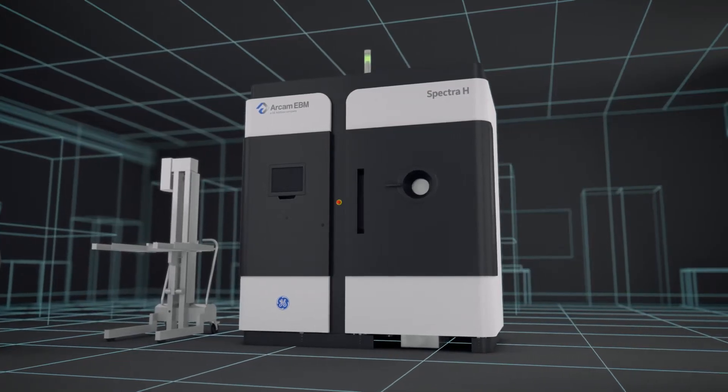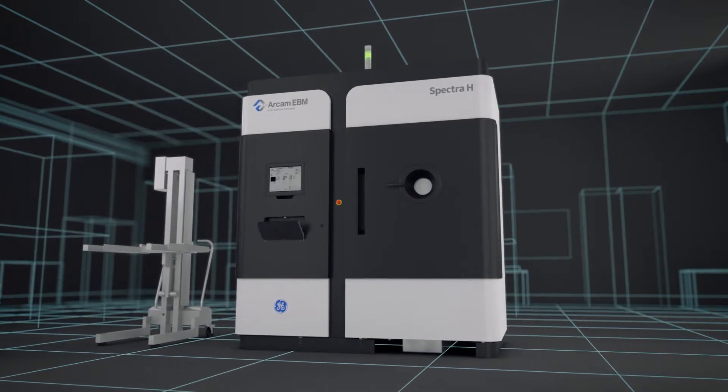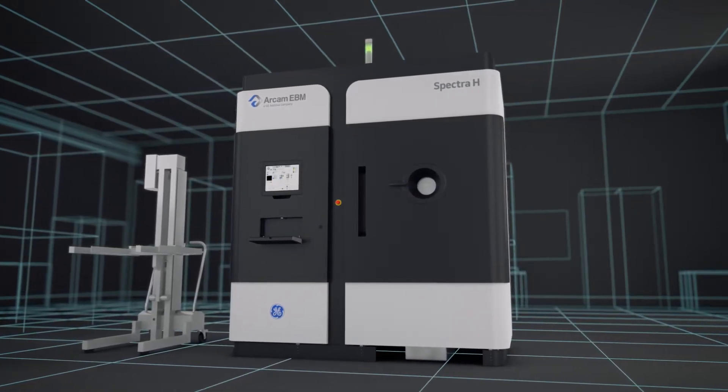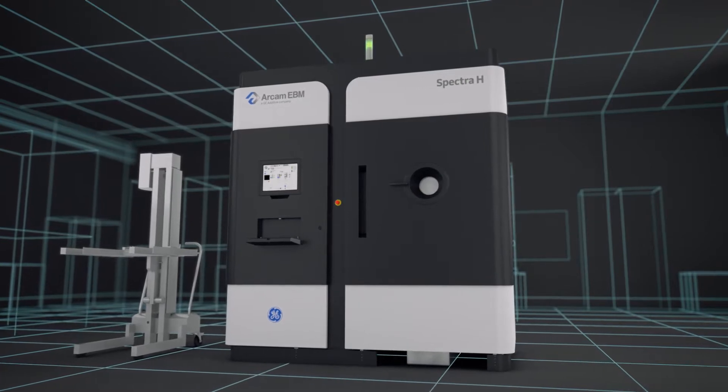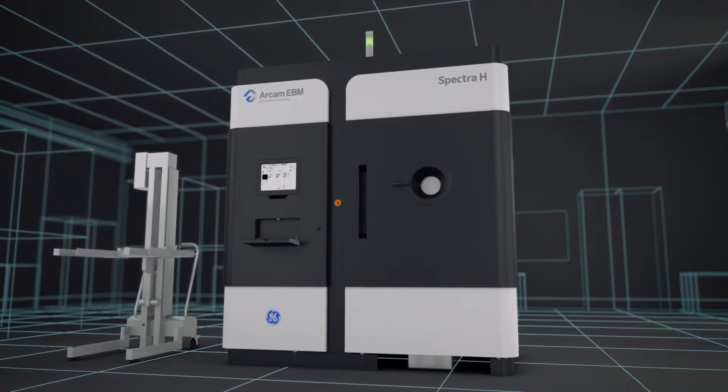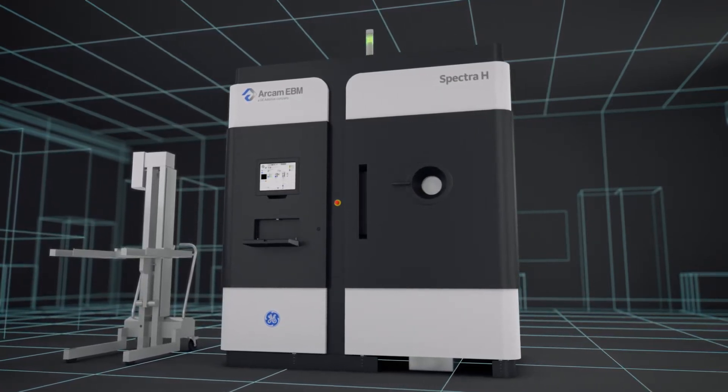At the center of this next-generation system is the Arcam EBM Spectra H, a machine capable of producing parts at temperatures exceeding 1,000 degrees Celsius, with increased build sizes and speeds while simplifying operation.